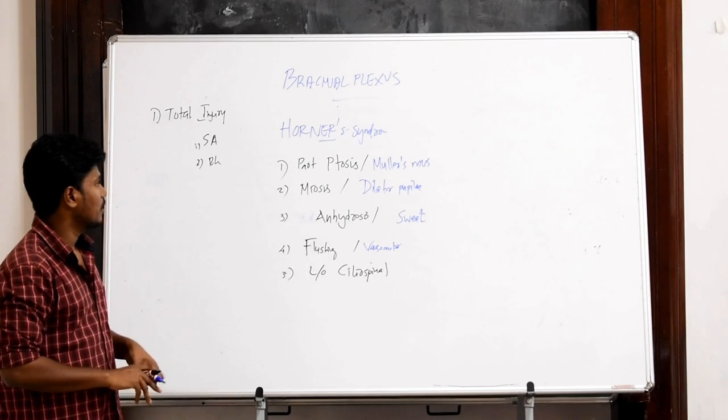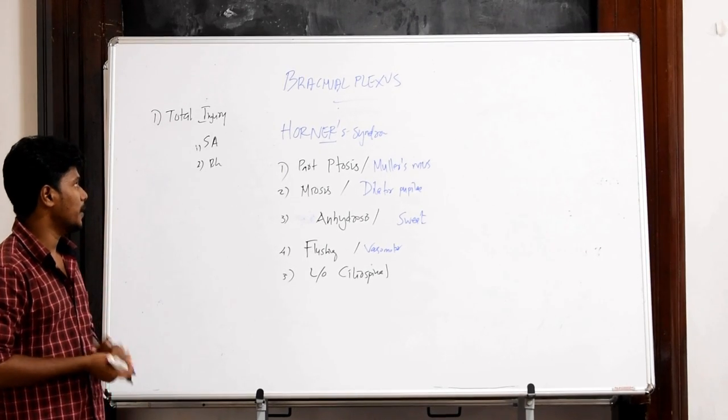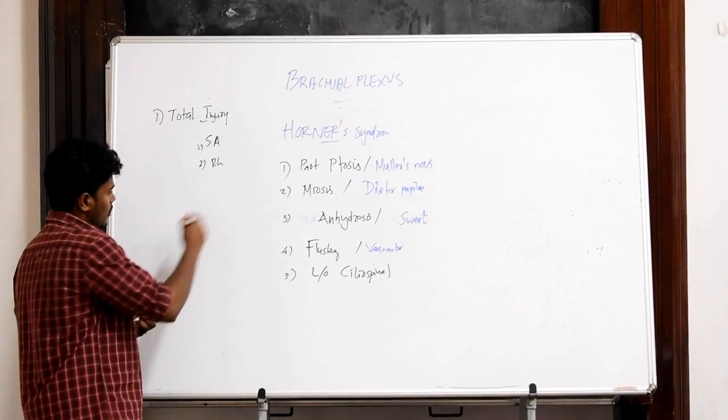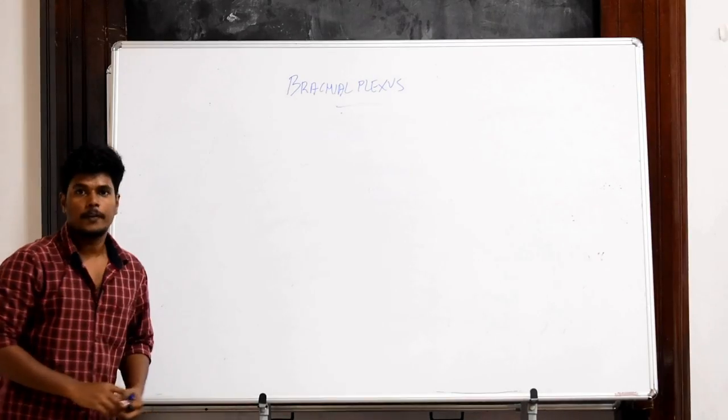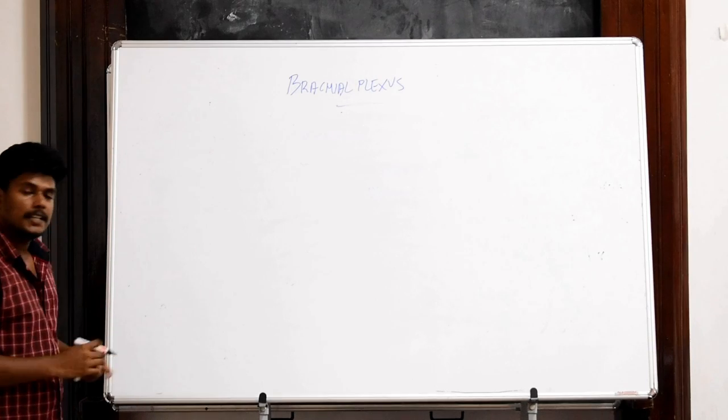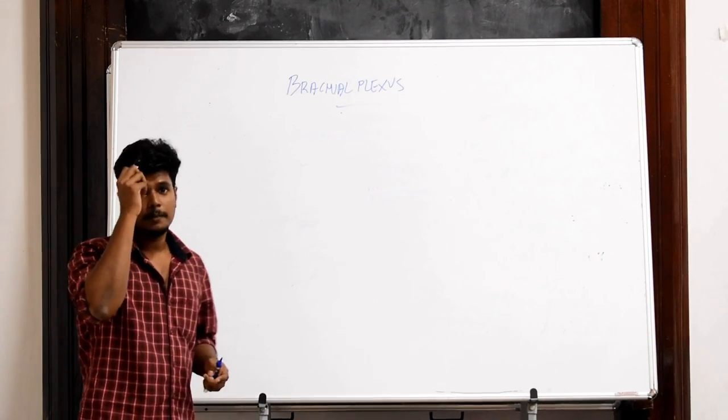These five features are actually seen in Horner's syndrome which is caused by damage of the T1 ventral rami of the brachial plexus. Now, we will look up what happens if there is injury to the upper trunk of brachial plexus.